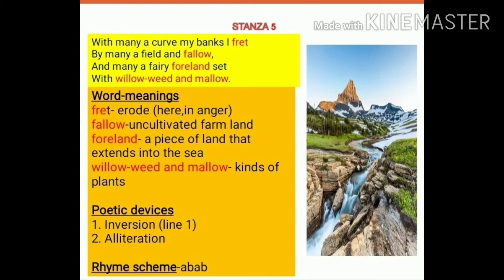Explanation: 'With many a curve my banks I fret.' Here curve means the twists and turns that the brook is taking. Banks means the edges of the brook, and fret means to wear off in anger. So here the brook is saying that when it twists and turns, the edges of the brook gradually wear off. 'By many a field and fallow' — when it's passing through the fields, and fallow means uncultivated lands.